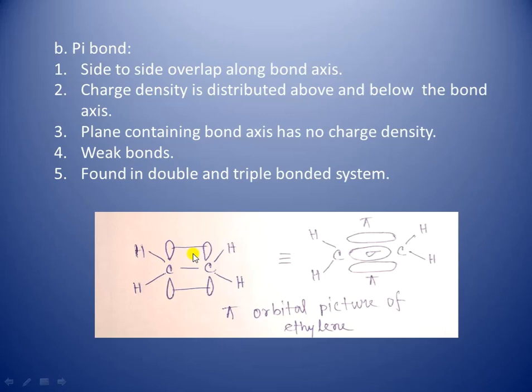Pi bonds are generally found in all double and triple bonded systems. For example, you can find it in ethylene where exists one sigma bond and one pi bond, and in acetylene where exists one sigma bond and two pi bonds. So whenever you see a double bond or triple bond system, you will find one sigma bond and one pi bond, or one sigma bond and two pi bonds respectively.